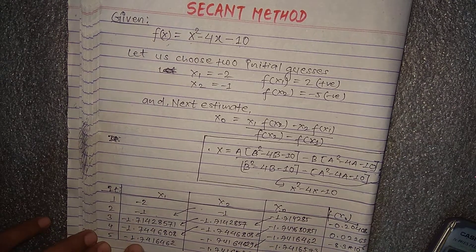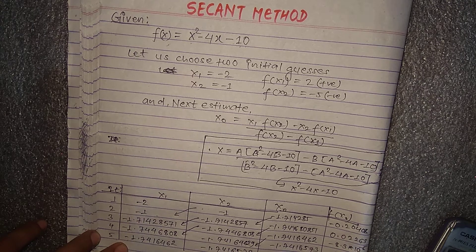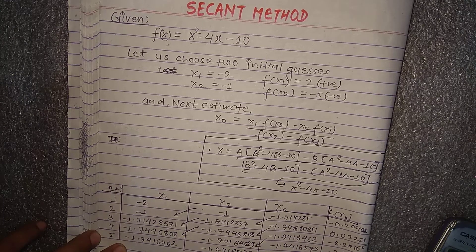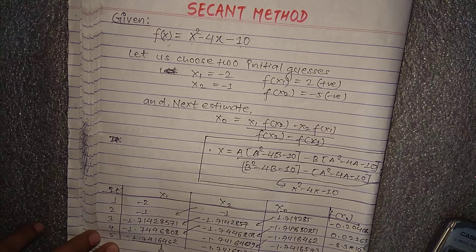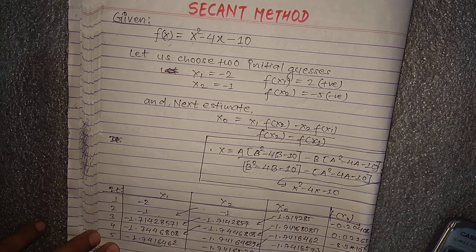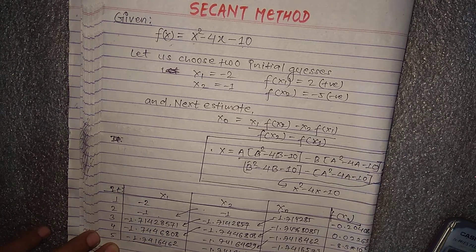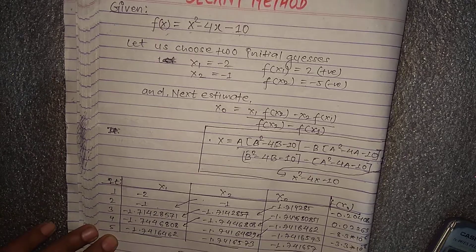In the fifth iteration, x1 is minus 1.714162, x2 is minus 1.71416573, and x0 is also minus 1.71416573. We can see that x1, x2, and x0 have converged to the same value up to the third decimal place.